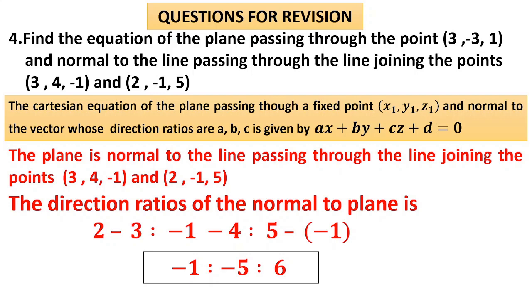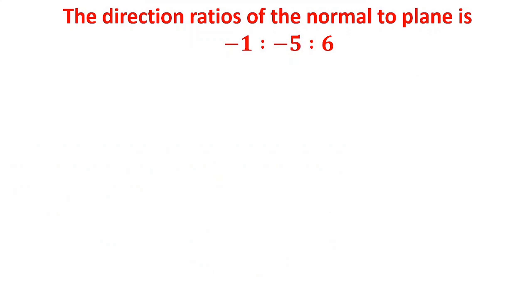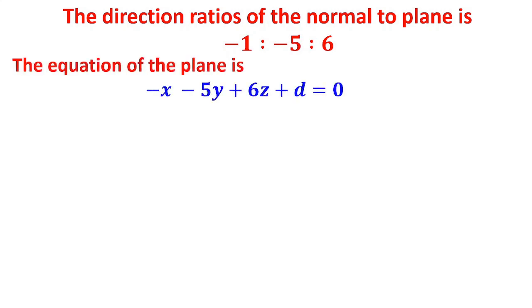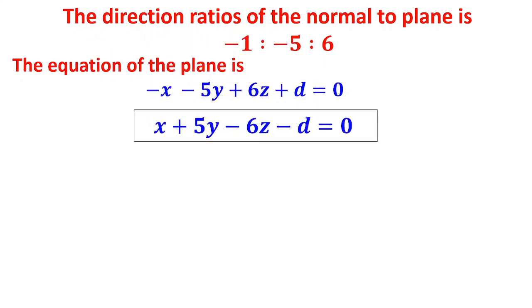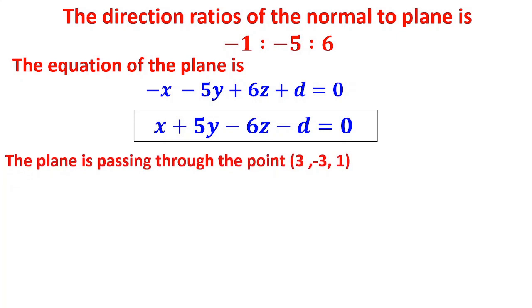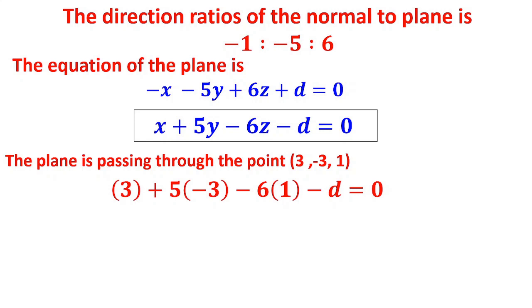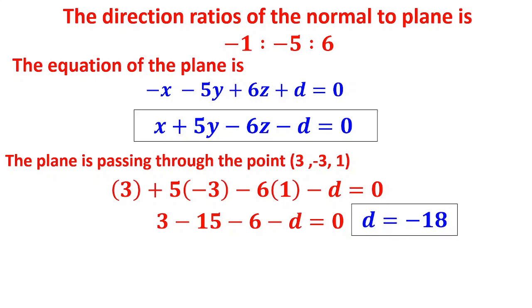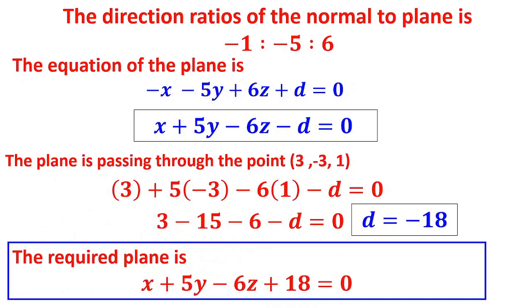With direction ratios –1, –5, 6, the plane equation is –x minus 5y plus 6z plus d equals 0. Keeping the first coefficient positive, write: x plus 5y minus 6z minus d equals 0. To find d, substitute the given point (3, –3, 1): 3 plus 5(–3) minus 6(1) minus d equals 0, giving d equals –18. Substituting back, the equation of the plane is x plus 5y minus 6z plus 18 equals 0. The direction ratios of the normal to the plane give the coefficients a, b, c.